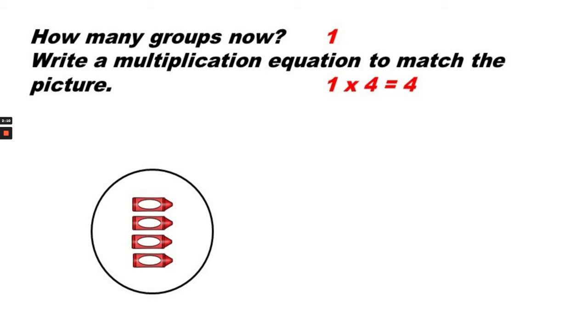How many times do we have to skip count for this equation? One time. That's correct. So 4 times 1 or 1 times 4 equals 4.